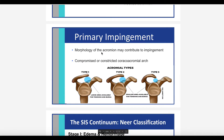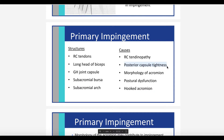Another issue can be the morphology of the acromial process. There are three types of acromions: a straight type 1, a slightly curved type 2, and a hooked type 3. As you get more curvature in the acromion, the subacromial space decreases. Individuals with a type 3 hooked acromion have a smaller subacromial space and are more likely to have primary impingement. Additionally, posterior capsule tightness restricts posterior movement during shoulder abduction, and now structures crash into each other, decreasing the subacromial space.